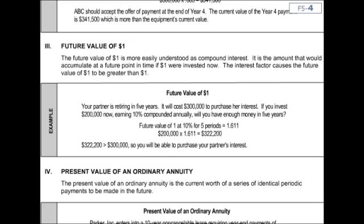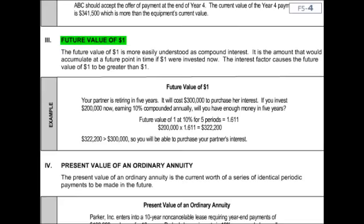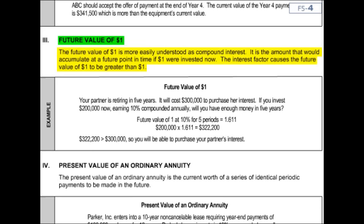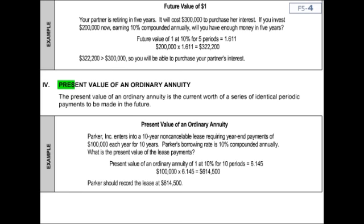Let's go on to Roman numeral three: the future value of one. The best example of this — put down in the margin — bank savings account. You put a dollar away today and you want to know how much this one-time, one-shot dollar amount will grow to in a number of future years. The future value of one is more easily understood as compound interest. It is the amount that would accumulate at a future point in time if one dollar were invested today. The interest factor causes the future value of one to be greater — notice it's a growing table; it will grow your dollars into the future.